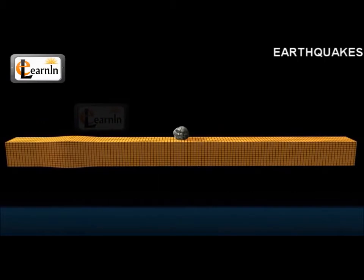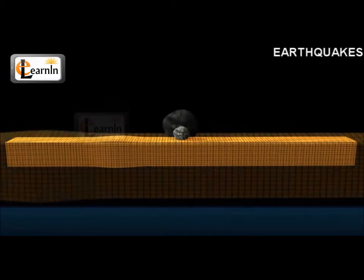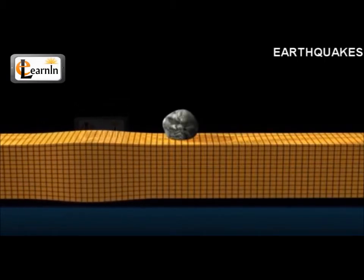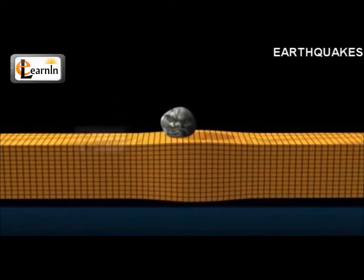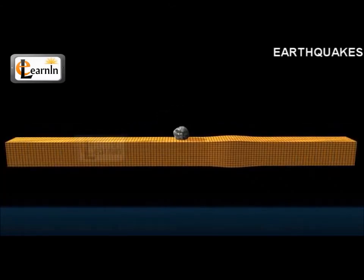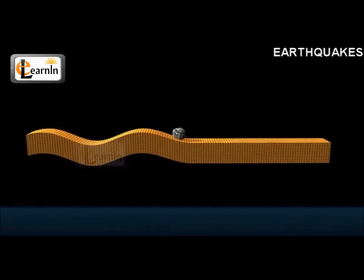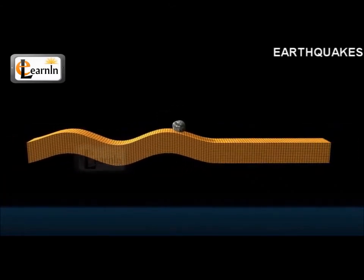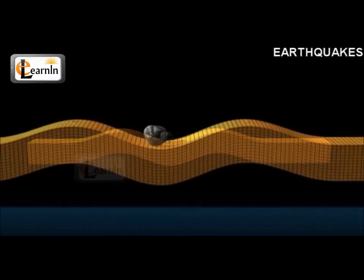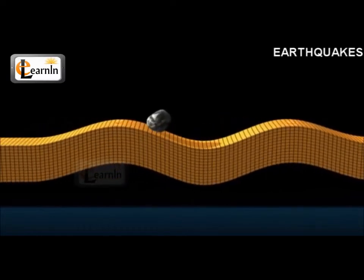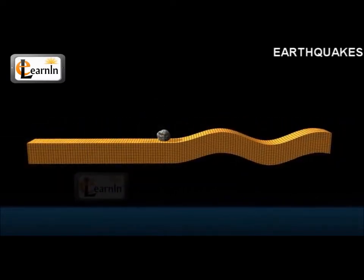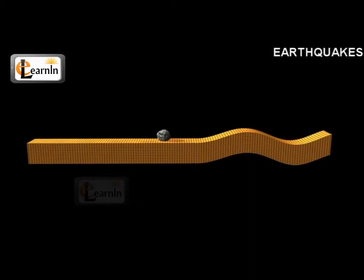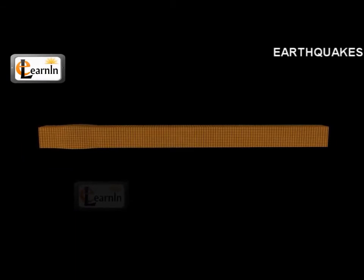The primary waves cause the particles of rock to vibrate forwards and backwards in the direction of the waves. Secondary waves, on the other hand, cause the particles to oscillate at right angles to the direction of the waves.